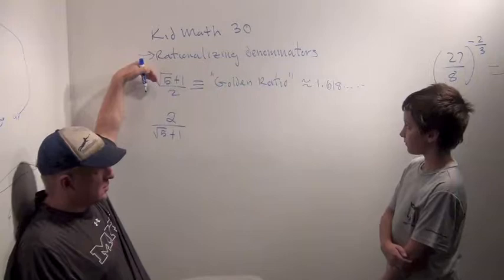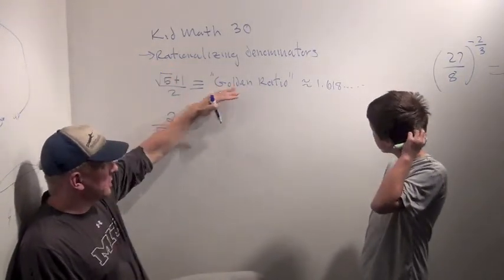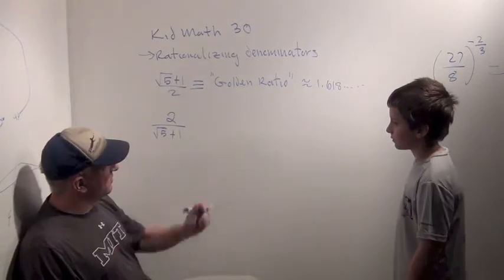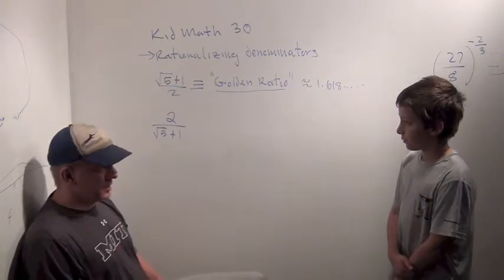And there's a really interesting square root, square root of 5 plus 1 over 2, which is called the Golden Ratio. Have you ever heard of this term before? No. I've heard of the Golden Rectangle. Yeah, exactly, exactly.